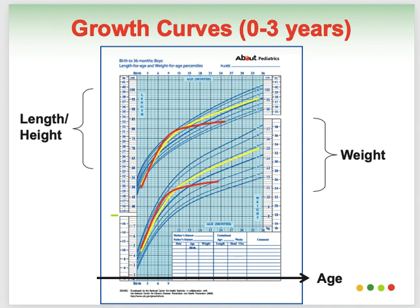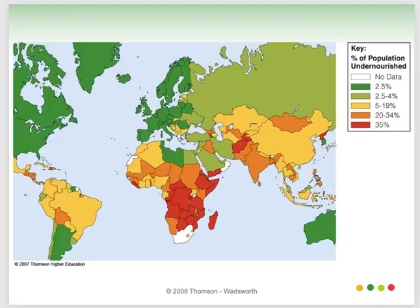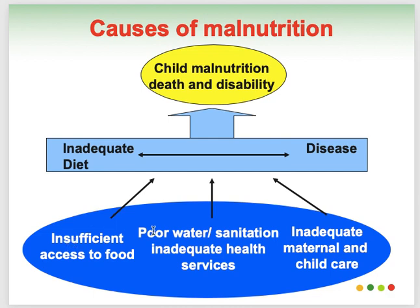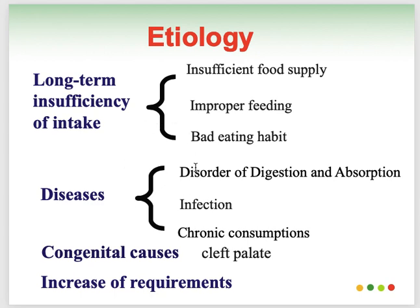Looking at a global map, the green, yellow, and red countries indicate the percentage of the population that is severely malnourished. The causes of malnutrition include insufficient access to food, inadequate health services, inadequate maternal and paternal care, inadequate diet, and disease problems. Etiologically, long-term insufficiency of intake, disease, and congenital issues all contribute.